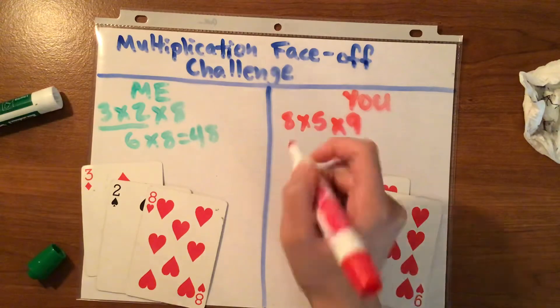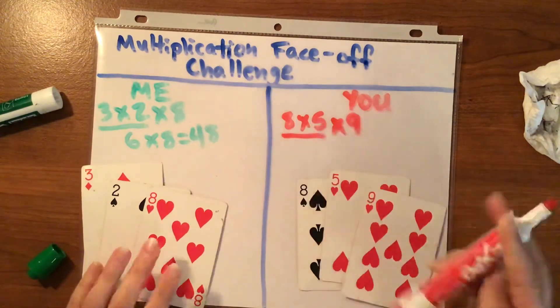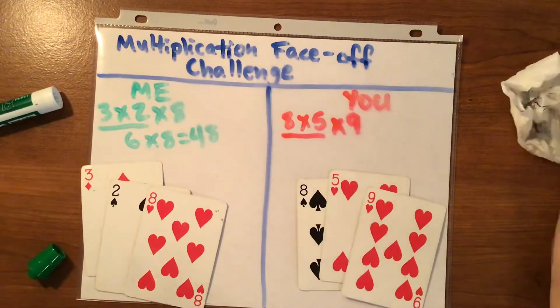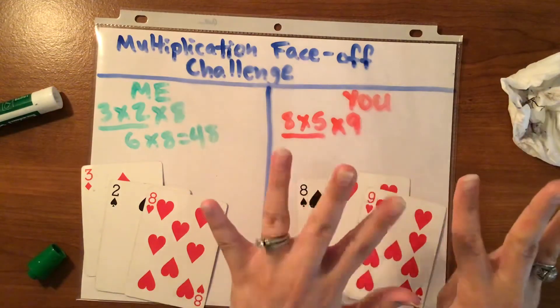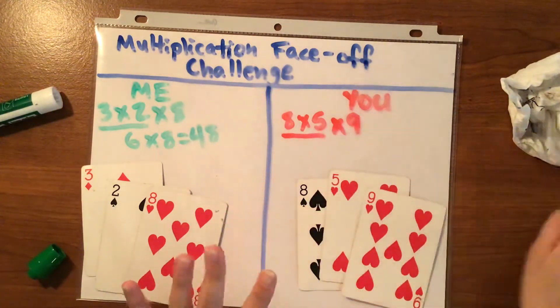So, I would do eight times five first. Because thinking of a clock, eight tells you what? It tells you five, ten, fifteen, twenty, twenty-five, thirty, thirty-five, forty.